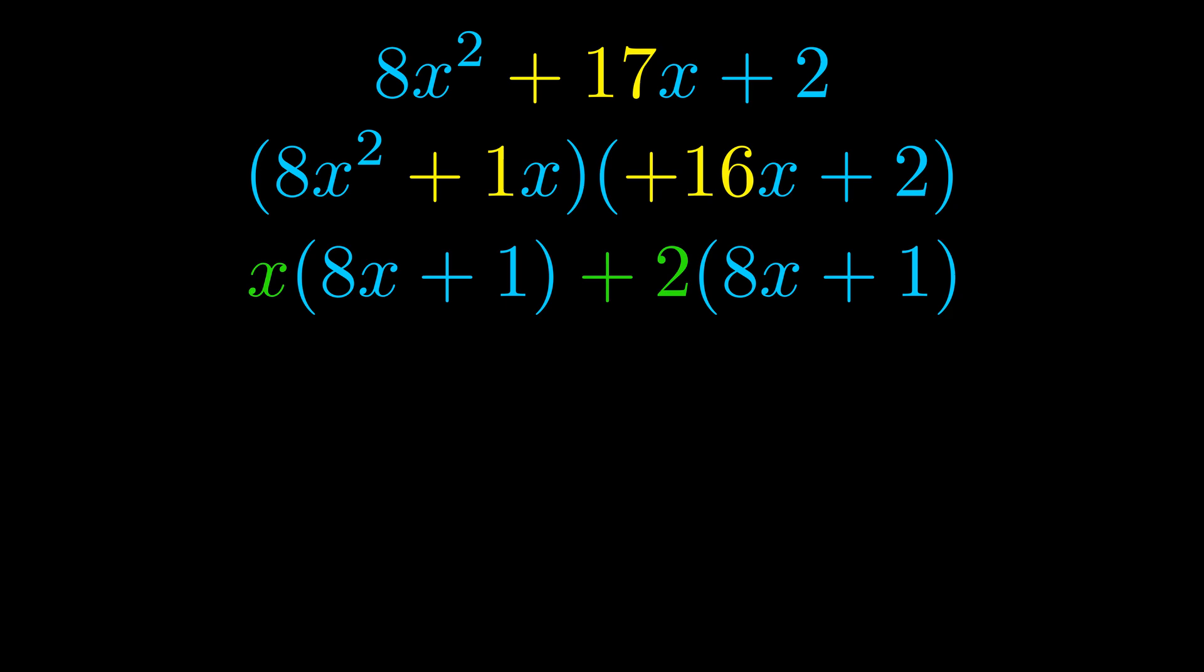Notice also how what remains inside of the parentheses is the same in both cases. The blue values are the same. Those blue values will become one of our factors and we will combine the two green values, the GCFs that we pulled out, to get the other one. And that is our fully factored equation.